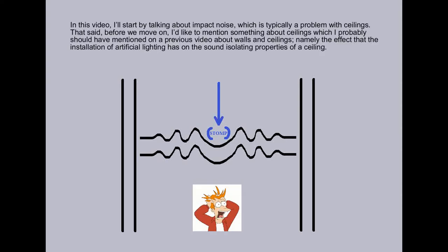In this video I'll start by talking about impact noise, which is typically a problem with ceilings. That said, before we move on, I'd like to mention something about ceilings which I probably should have mentioned in a previous video about walls and ceilings, namely the effect that the installation of artificial lighting has on the sound-isolating properties of a ceiling.